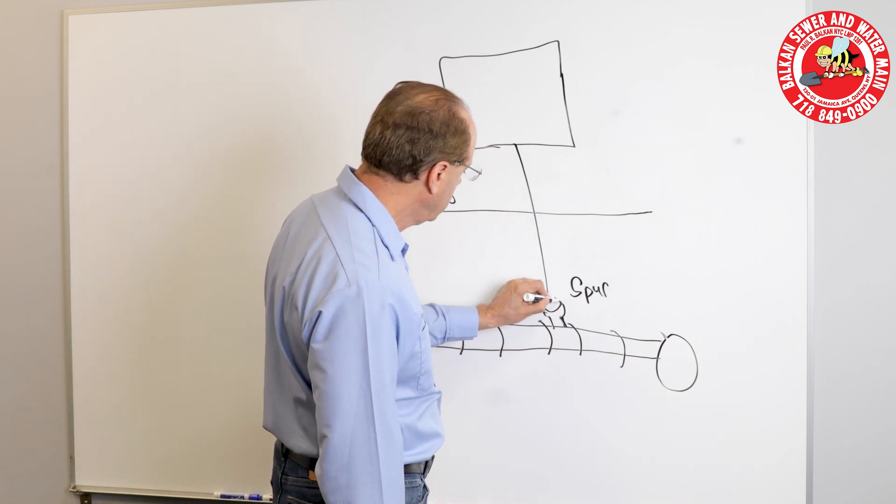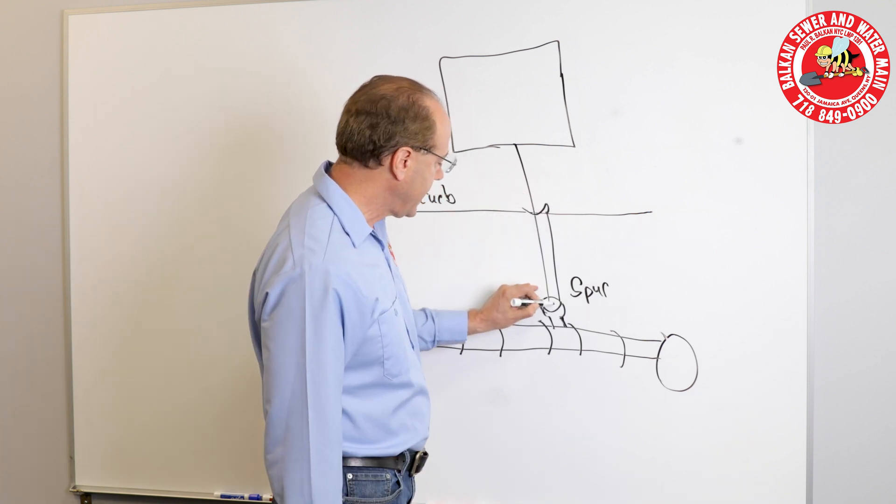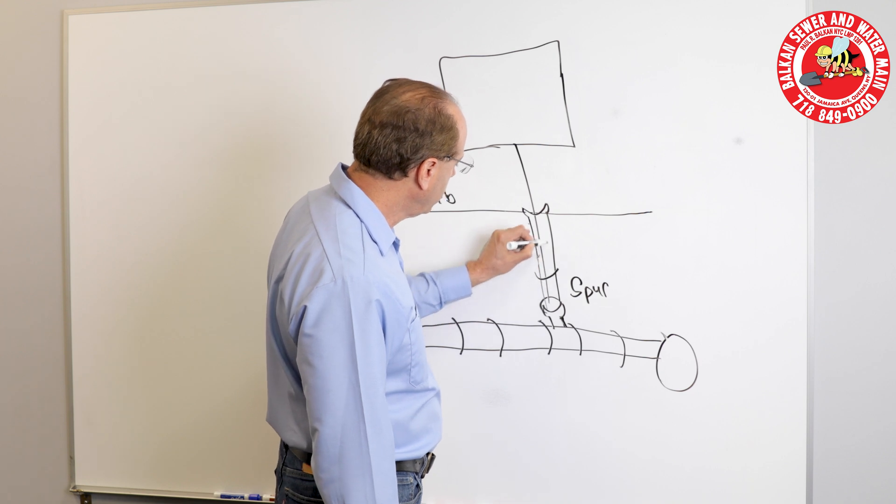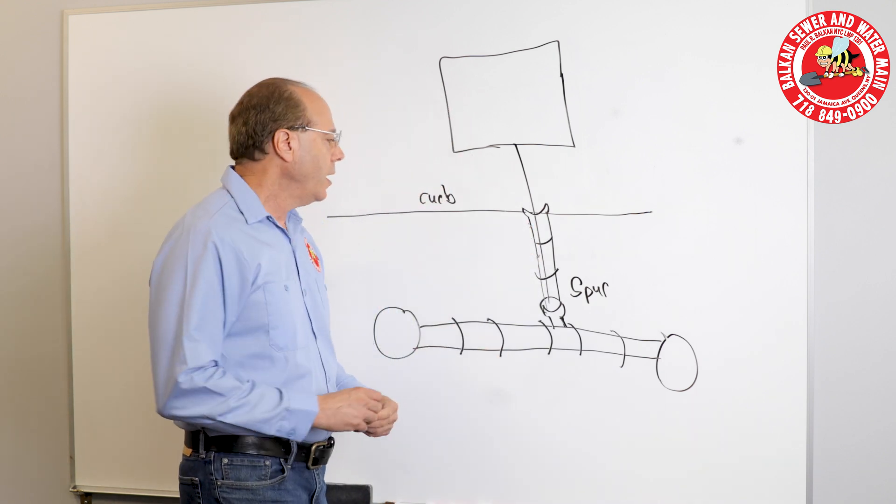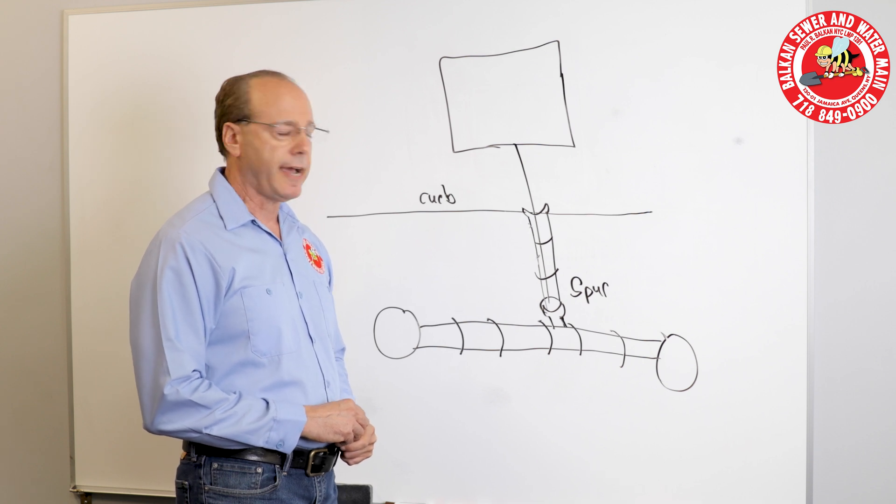So that means this pipe would extend all the way up to the curb, and instead of having a cap connection here, it's right at the curb. They have pipe going right up to your curb line, and that will probably cut the installation cost of your sewer at least in half.